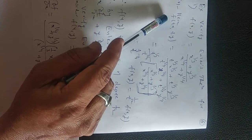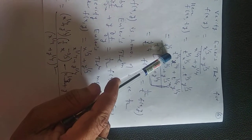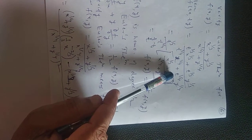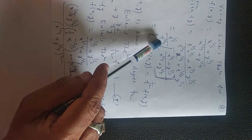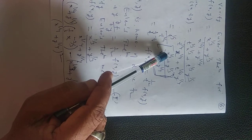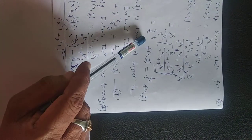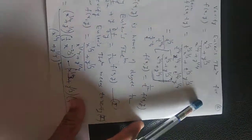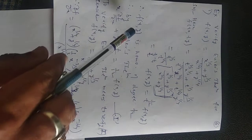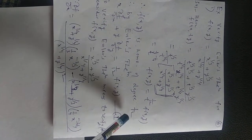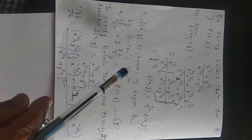For that, we find f(tx, ty), that is t raised to 1/3 · x raised to 1/3 plus t raised to 1/3 · y raised to 1/3, divided by t raised to 1/4 · x raised to 1/4 plus t raised to 1/4 · y raised to 1/4. So t raised to 1/3 is common from the numerator and t raised to 1/4 is common from the denominator, leaving (x^(1/3) + y^(1/3)) / (x^(1/4) + y^(1/4)), which equals t raised to 1/12 · f(x,y) using the law of indices. So f(x,y) is a homogeneous function of degree 1/12 in x and y, and once the degree is known we can use Euler's theorem.